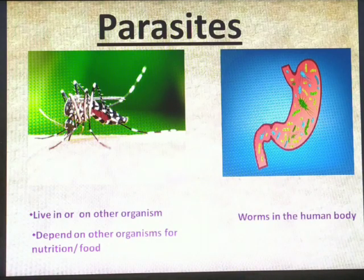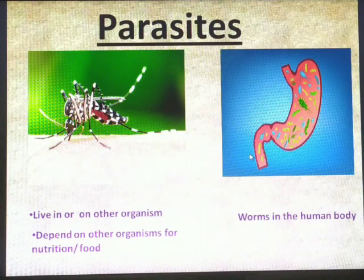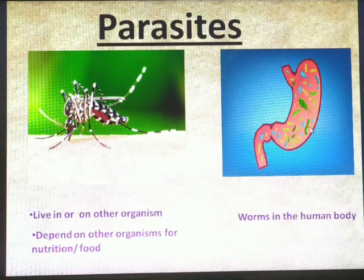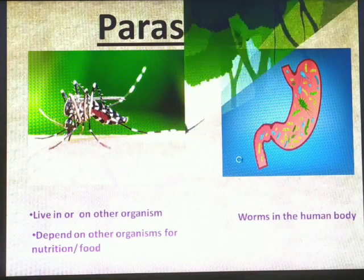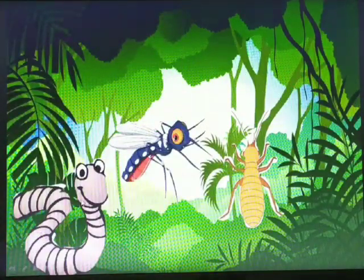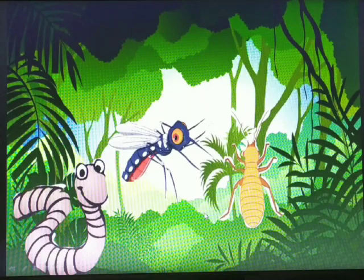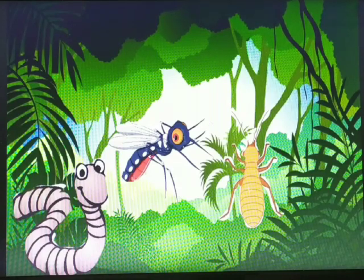Mosquito is a parasite that feeds upon living organisms from the outside. There are more dangerous parasites which live inside living organisms — for example, worms. There are a number of worms which can live inside our body; they feed upon the digested food of living organisms, so they are very dangerous for our health. Examples of parasites include tapeworm, mosquito, and lice, which all live in or on other organisms for their nutrition.